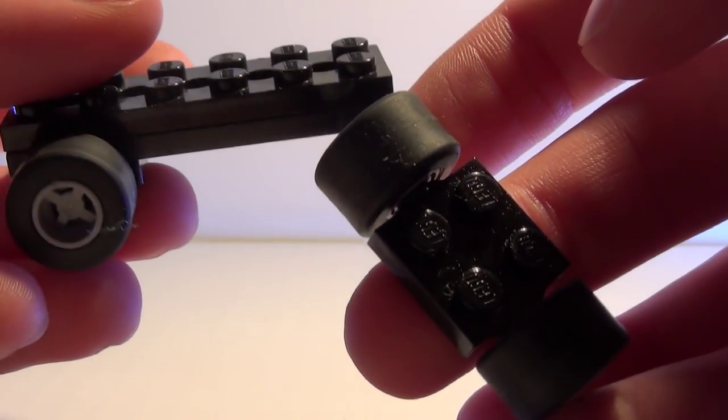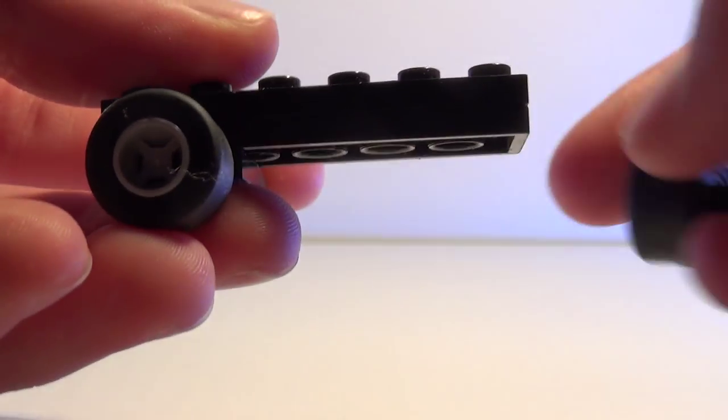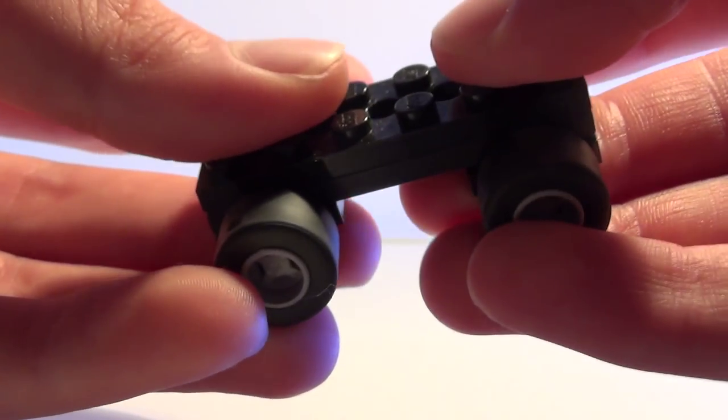To make the base, you're gonna take a couple of wheels like this and put a couple of 2x6s on top.